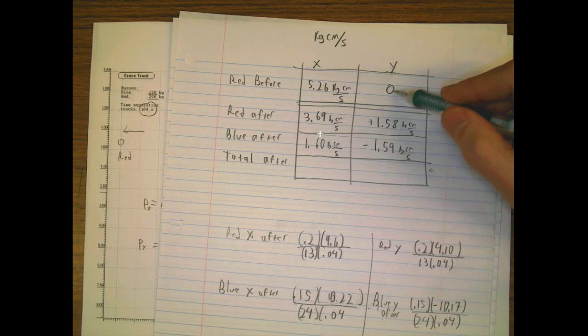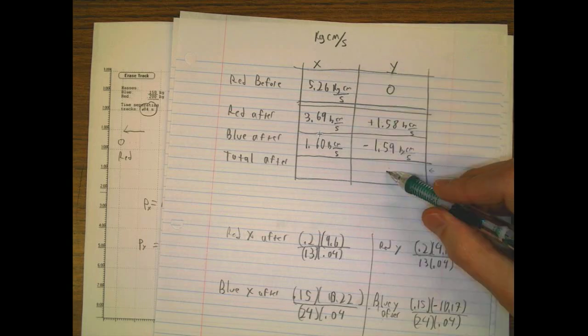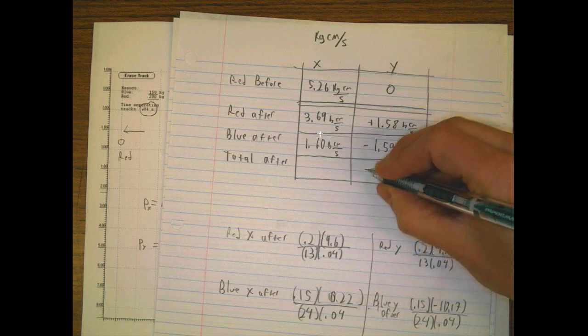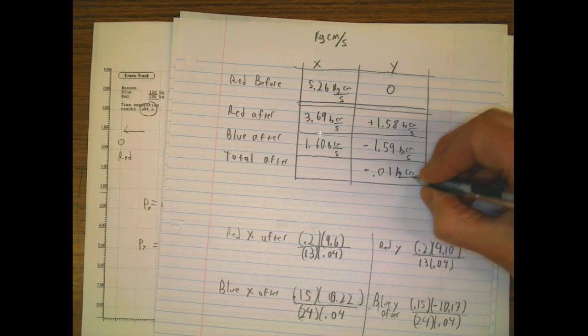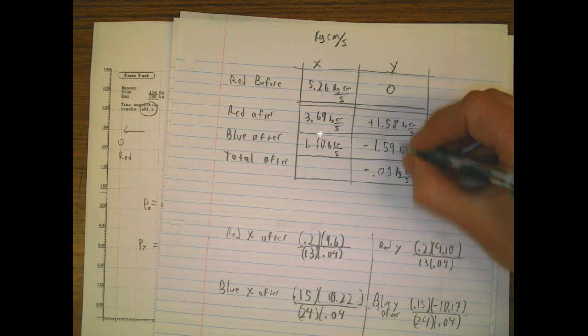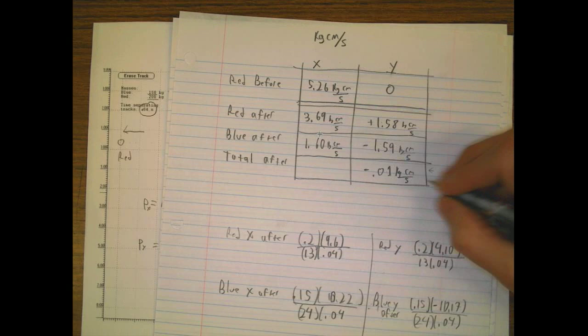So we think afterwards there's not going to be any y momentum. But guess what? There was: negative 0.01 kilogram. That's just because I'm not very good at this - I measured something wrong or we're down at the limit of it. Actually, that's pretty darn good. That's like one part in a hundred. So that's essentially zero.